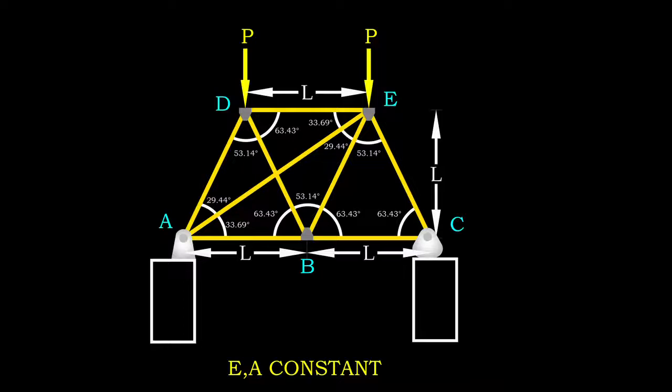The panel length and truss height are equal to L. Truss sectional area and modulus of elasticity of members are the same, and thus, the axial stiffness is the same for all members.